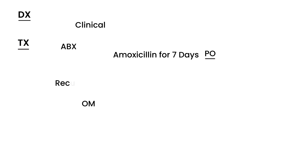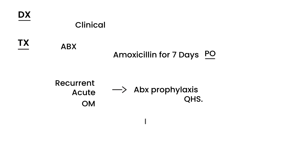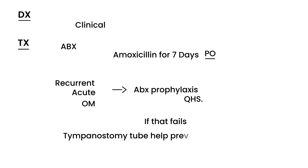The key thing with acute otitis media is when you have recurrent acute otitis media, where the child keeps getting these infections. The first step in treatment is antibiotic prophylaxis — meaning you give the child antibiotics every night to make sure the child doesn't develop it. If that fails, then you put in tympanostomy tubes, which is a very common procedure. They help prevent the accumulation of fluid in the middle ear and are very commonly done in pediatrics.